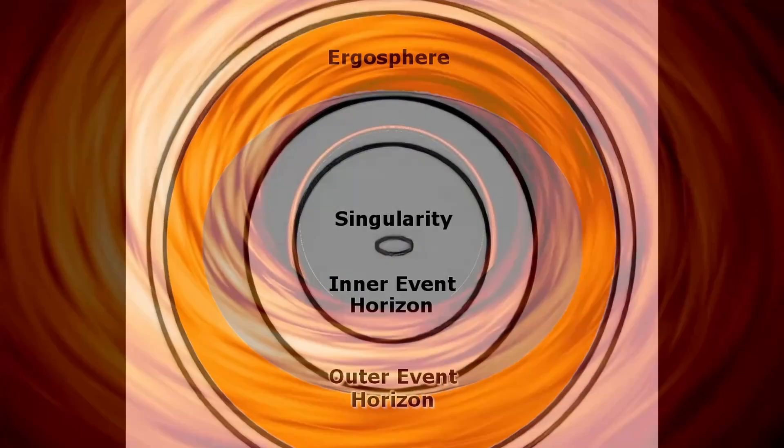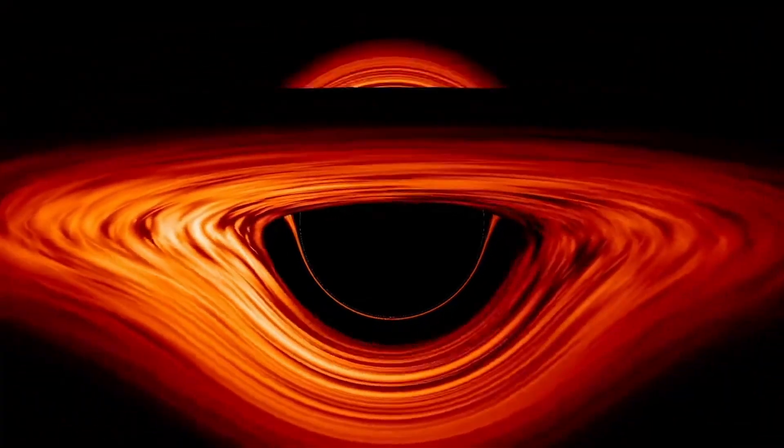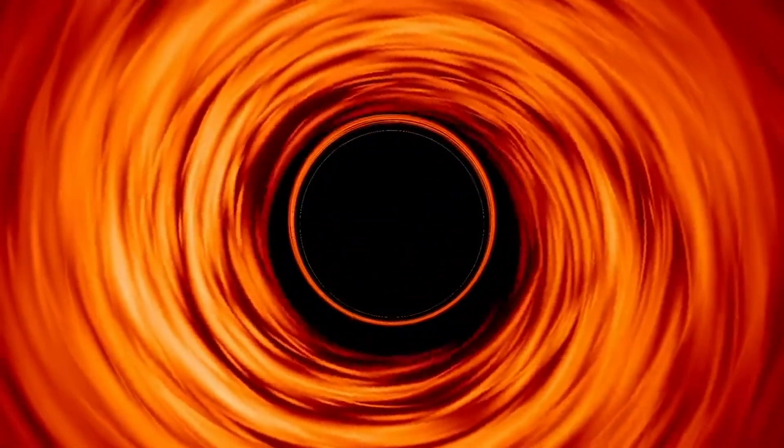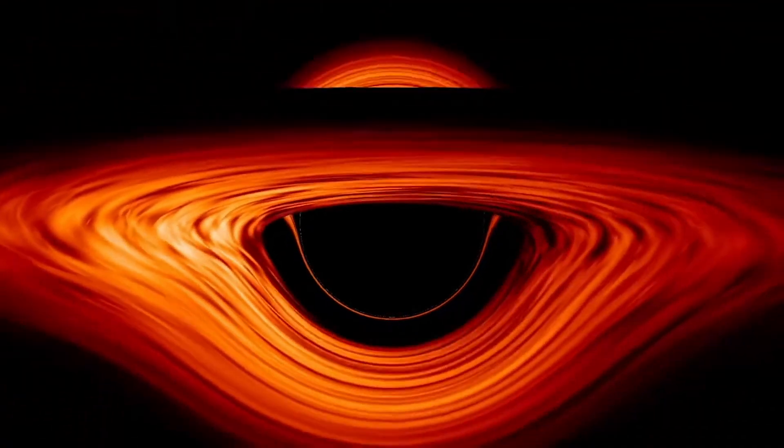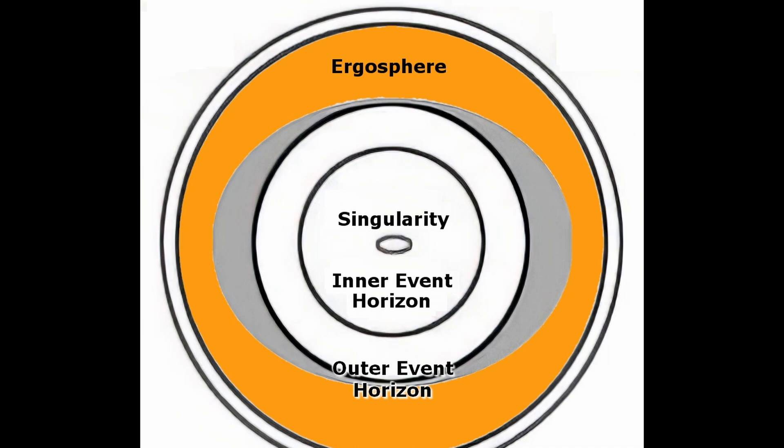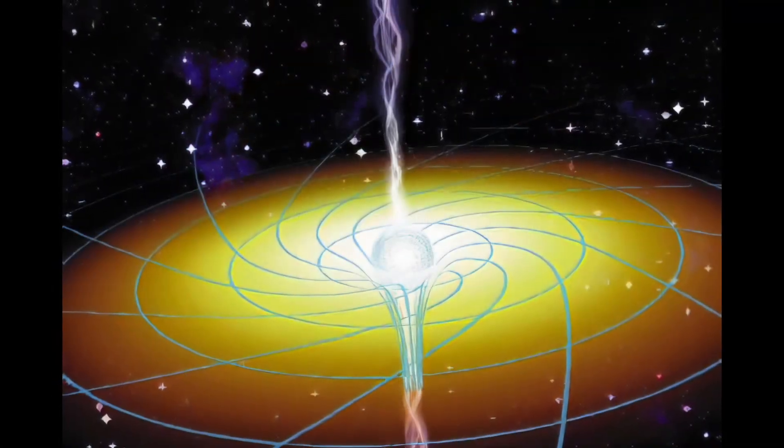Black holes in general have so much angular momentum that they can nearly break our brains trying to comprehend them, and in the ergosphere, a bizarre effect called frame dragging takes place. Frame dragging is the effect of a rotating object's gravity on the space-time around it. In the ergosphere, this effect is so strong that it causes the actual fabric of space-time to rotate along with the black hole.